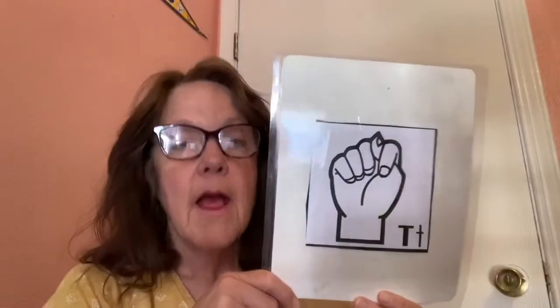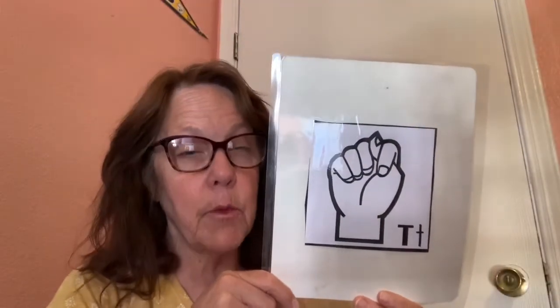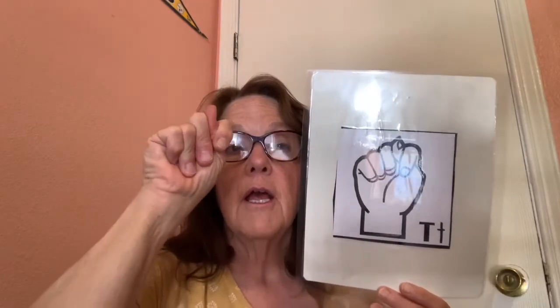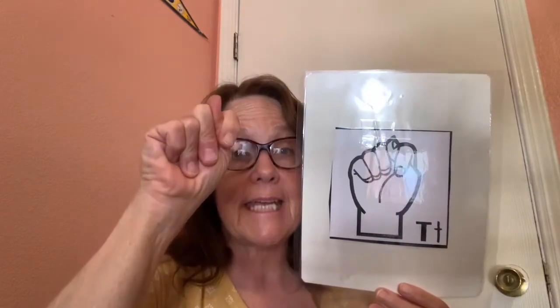Say the name with me: T. This is the sign language for the letter T. Try it with me. Put your hand up, bring down your four fingers and touch your palm, then tuck your thumb under the first finger. This is the sign language for the letter T.